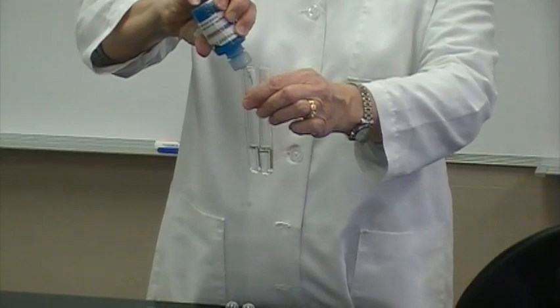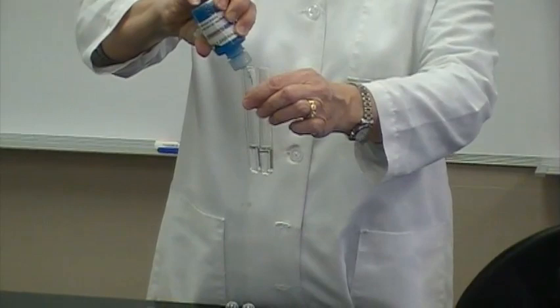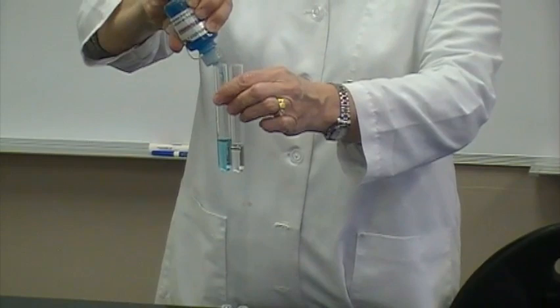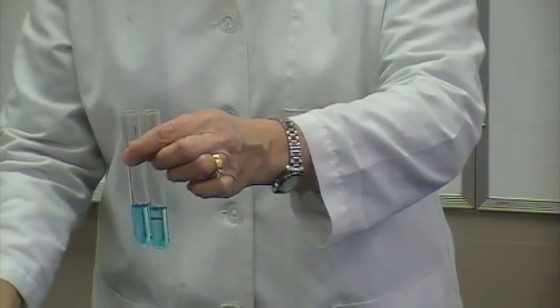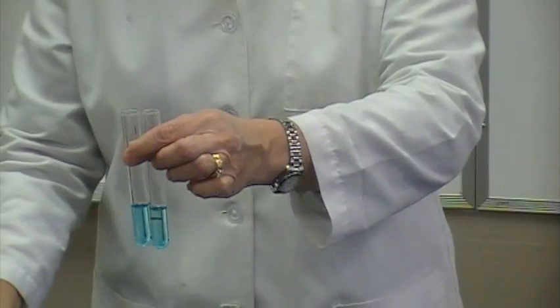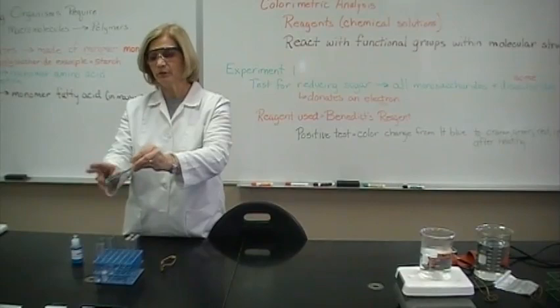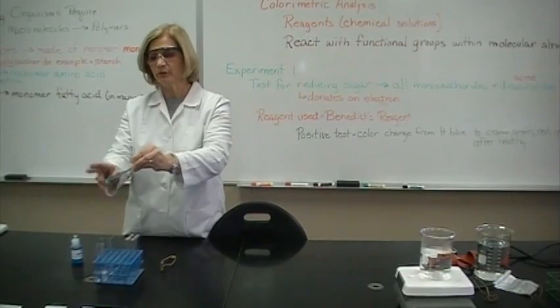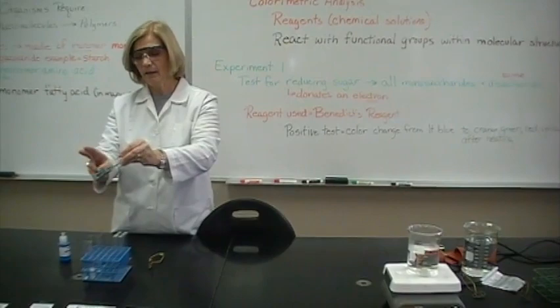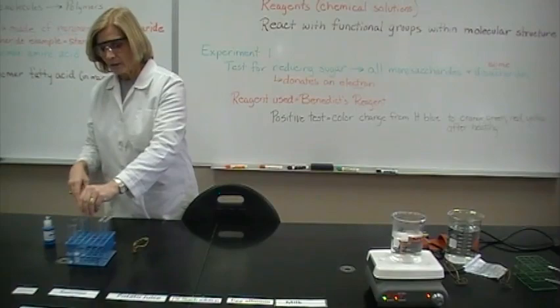Benedict's reagent is in a dropping bottle on your tables. You require at least 20 drops of solution to be placed in each tube. In the laboratory we try not to ever shake tubes as it can be dangerous. The safest way is to grasp the mouth of the test tube using two of your fingers on the opposite hand. If you will tap the bottom of the tube it will mix the chemicals thoroughly. So be sure to tap all of your tubes.